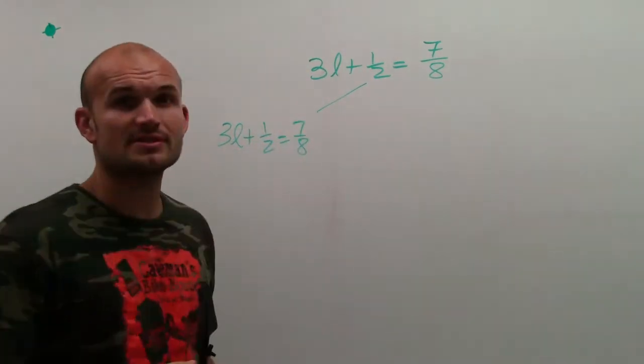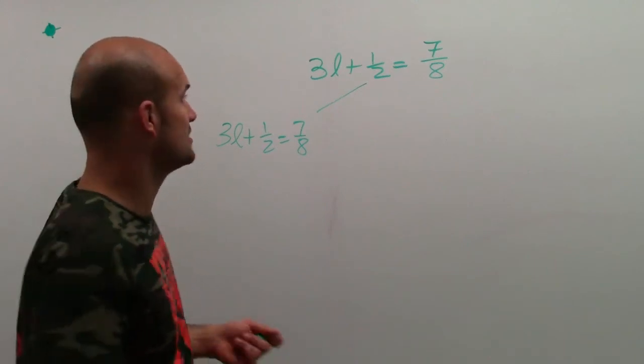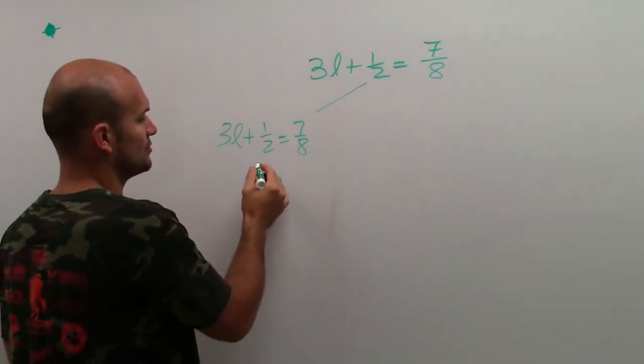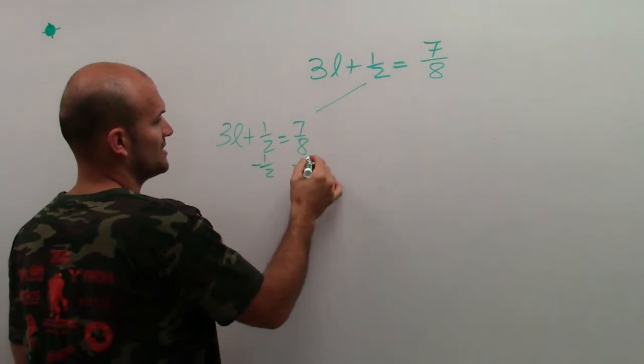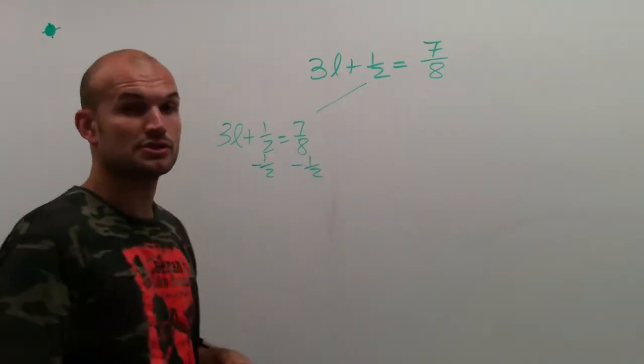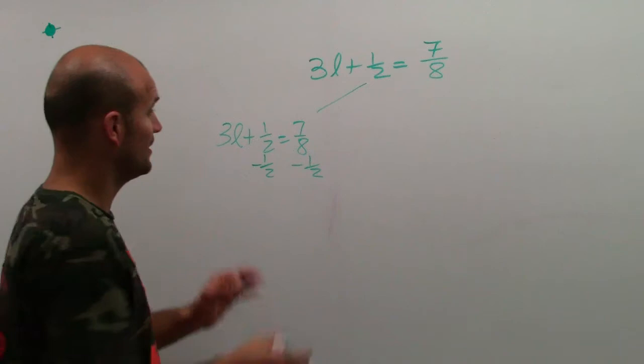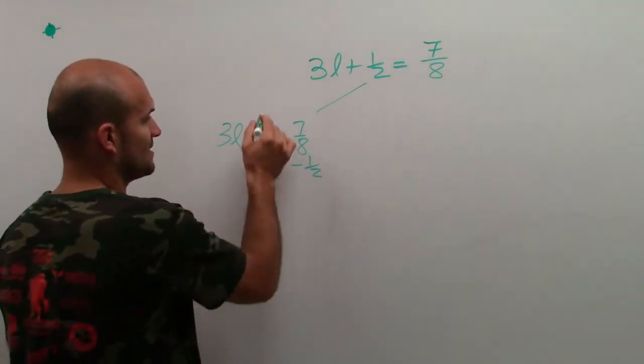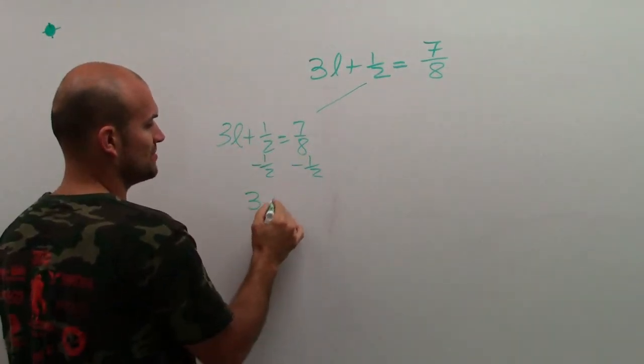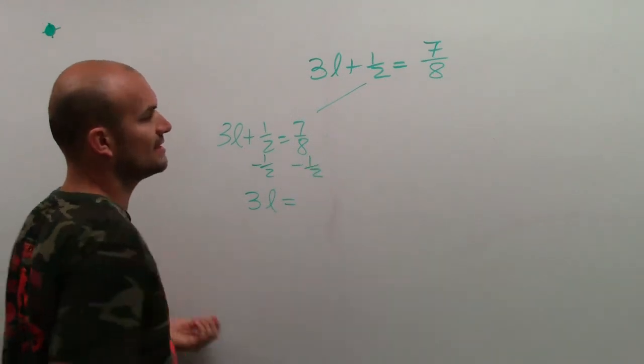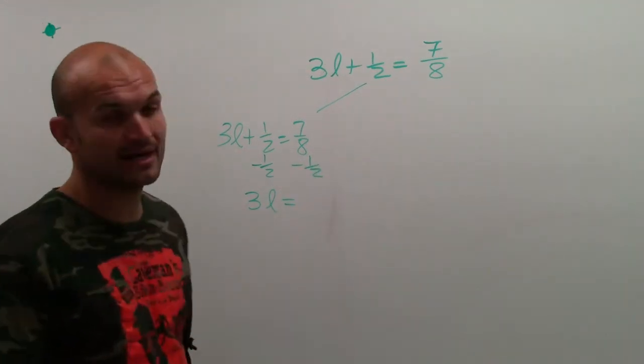The first thing you're going to want to do, by using your inverse operations, is to subtract 1 half on both sides of your equation. By using the subtraction property of equality, I'm going to subtract the 1 half on both sides. That is going to get me to 0. 3L plus 0 would just be 3L equals, now I need to calculate what is 7 eighths minus 1 half.